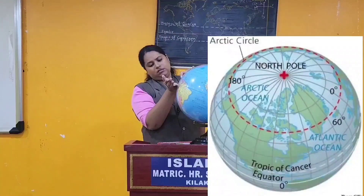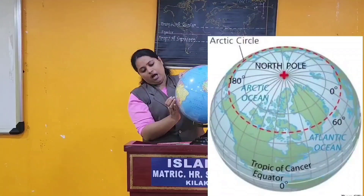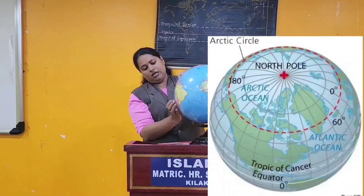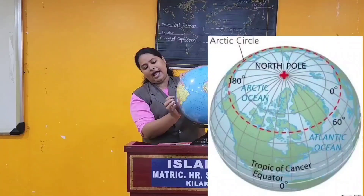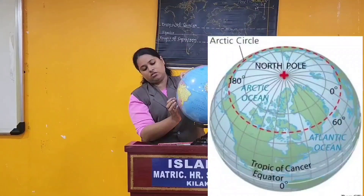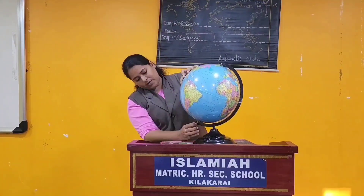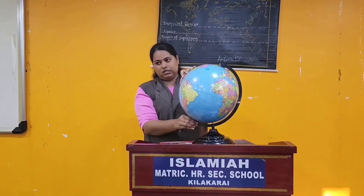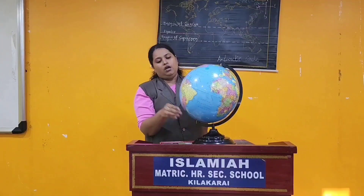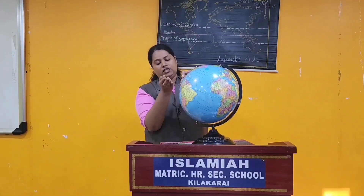From the equator, towards the south, you have another latitude which is called the Tropic of Capricorn. And towards the south pole, you have the Antarctic Circle.